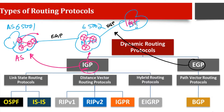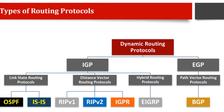Under IGP there are many routing protocols, but under EGP there is only one major protocol used today, which is BGP. This is also used for the internet. So for EGP, straightforwardly, there is only one type of routing protocol. Under IGP, we have two main categories: the first is called link state routing protocol, and the second is called distance vector routing protocol.